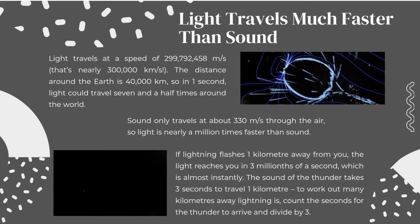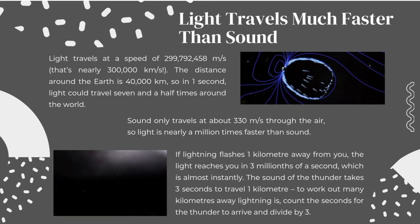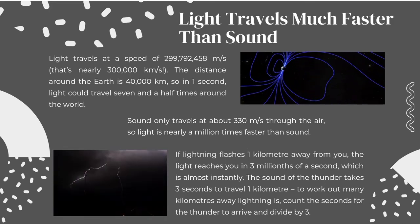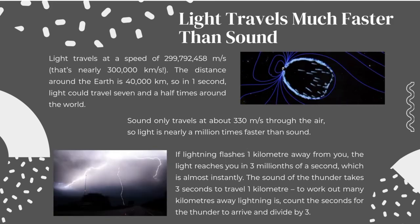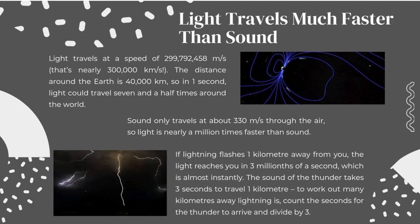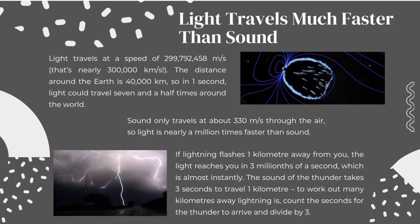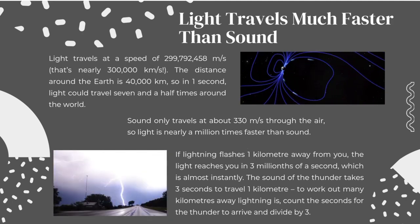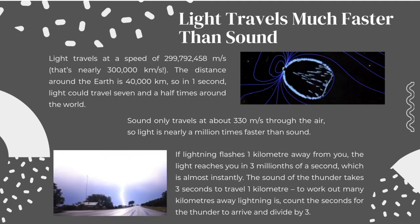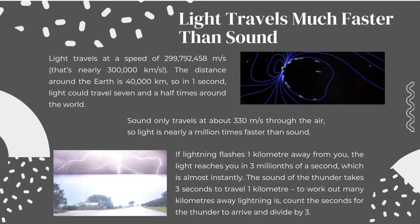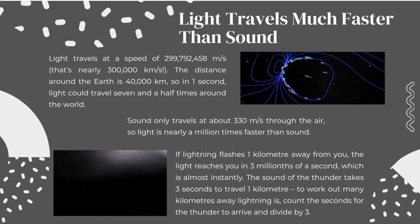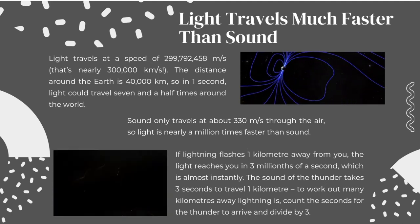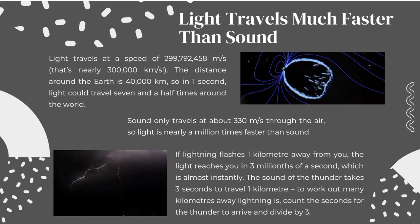If lightning flashes one kilometer away from you, the light reaches you in three millionths of a second, which is almost instantly. The sound of the thunder takes three seconds to travel one kilometer. To work out how many kilometers away lightning is, count the seconds for the thunder to arrive and divide by three.